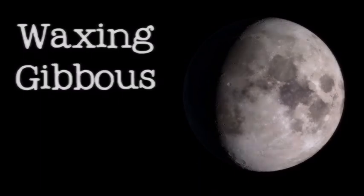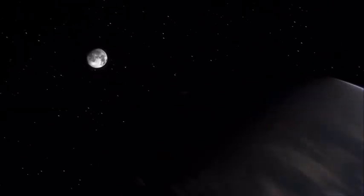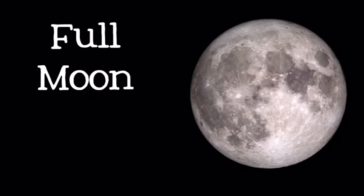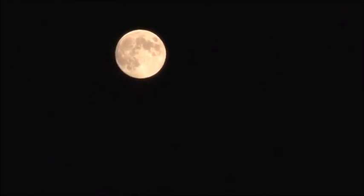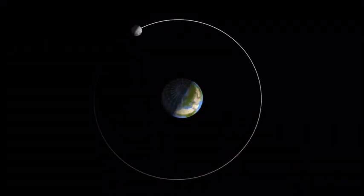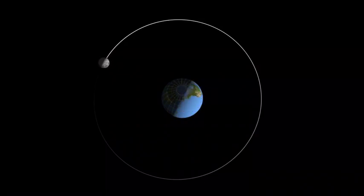As the days pass, the moon continues to grow, entering its next phase: the waxing gibbous. Gibbous means humped or swollen, and we call it waxing because it grows thicker every night until it reaches the next phase — the full moon. A full moon is the biggest, brightest, and easiest phase to see. The moon rises at sunset and is up all night. At this point the moon is halfway through its orbit and is on the opposite side of the earth from the sun.